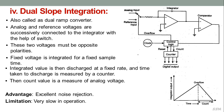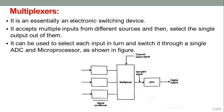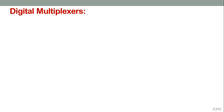A multiplexer is an essential electronic switching device that enables each of its inputs to be sampled in turn. It is a circuit able to accept data inputs from a number of sources, then select one input channel to give an output from just one of them. In applications requiring measurements at a number of different locations, rather than using a separate ADC and microprocessor for each, a multiplexer can select each input in turn and switch it through a single ADC and microprocessor.